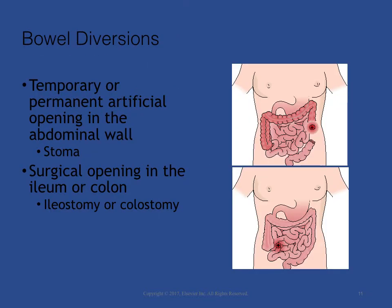Bowel diversions: Certain diseases or surgical alterations make the normal passage of intestinal contents through the small and large intestine difficult or inadvisable. When these conditions are present, a temporary or permanent opening called a stoma is surgically created by bringing a portion of the intestine out through the abdominal wall. These openings are called an ileostomy or colostomy, depending on which part of the intestinal tract is used to create the stoma.